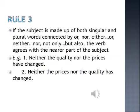Rule number three of spotting the errors. If the subject is made up of both singular and plural words connected by 'or,' 'nor,' 'either...or,' 'neither...nor,' 'not only...but also,' the verb agrees with the nearer part of the subject. For example: 'Neither the quality nor the prices have changed.' And: 'Neither the prices nor the quality has changed.'